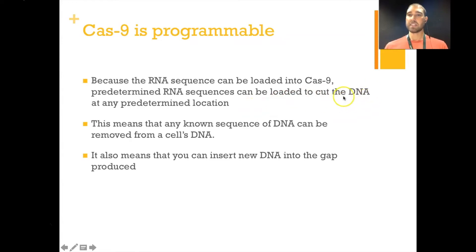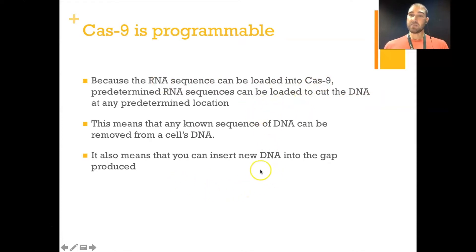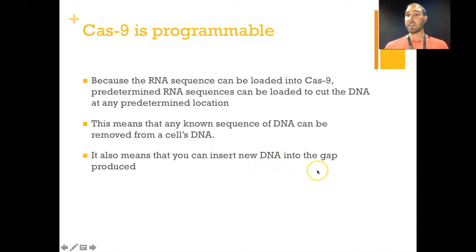As long as we know what the DNA sequence is, we can make an RNA copy, insert that into Cas9, and it can cut the DNA there. If we cut the DNA, that means we can insert new DNA into that gap — so we can insert new genes into the DNA. This is really quick and reasonably easy to do; it's much simpler than some of the other techniques we've been talking about.